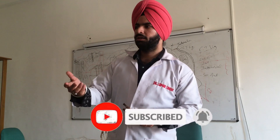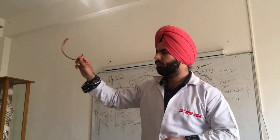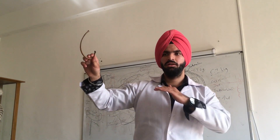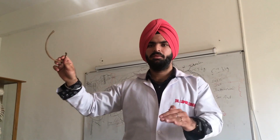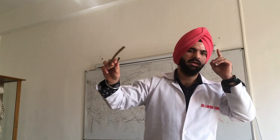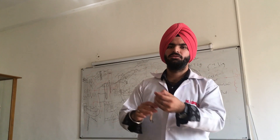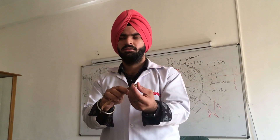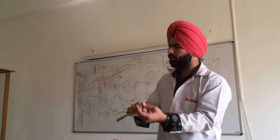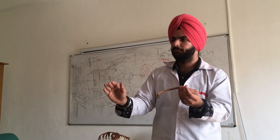The third atypical rib is the tenth rib. Why is it atypical? Because all the features are the same as that of typical ribs, except one: it has only one articulating facet. Only one articulating facet — except for that, all the features are the same.